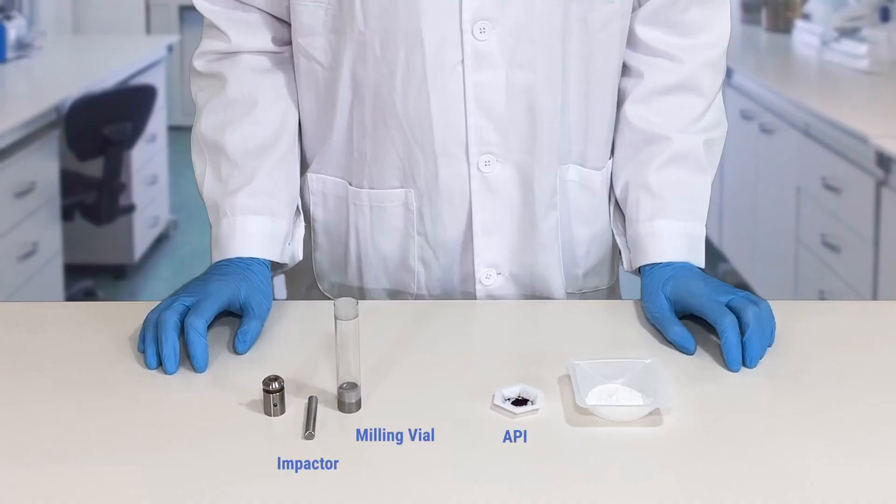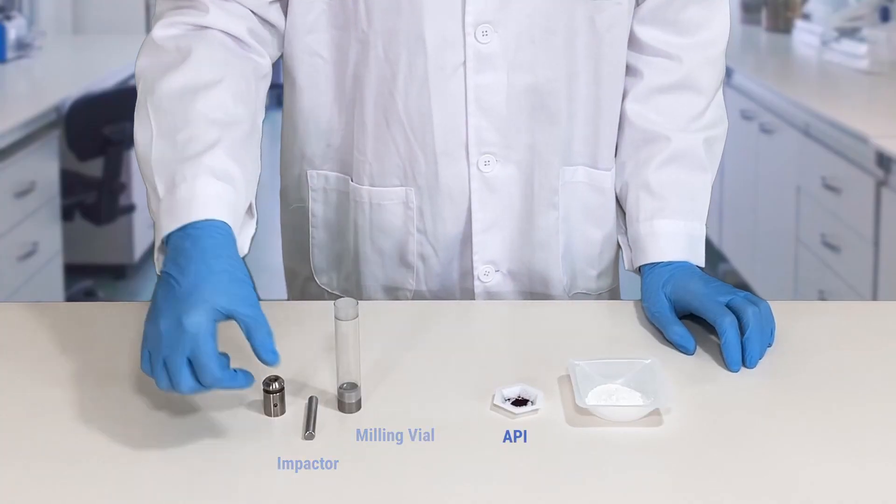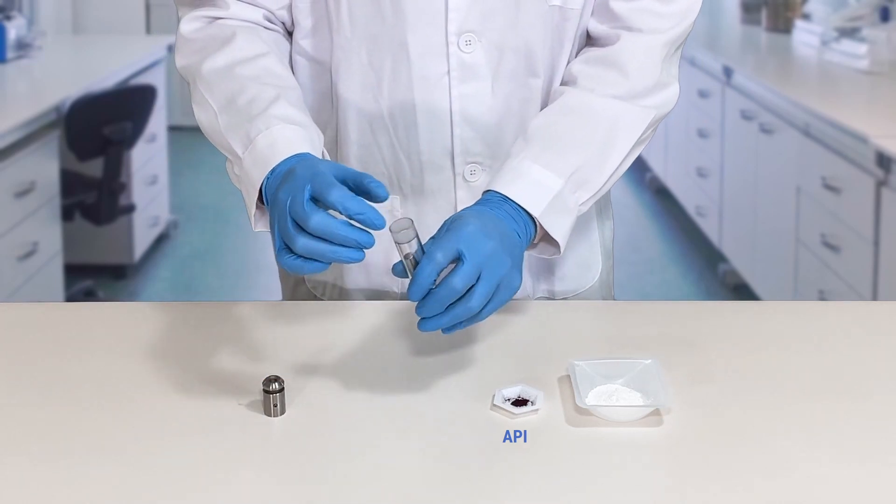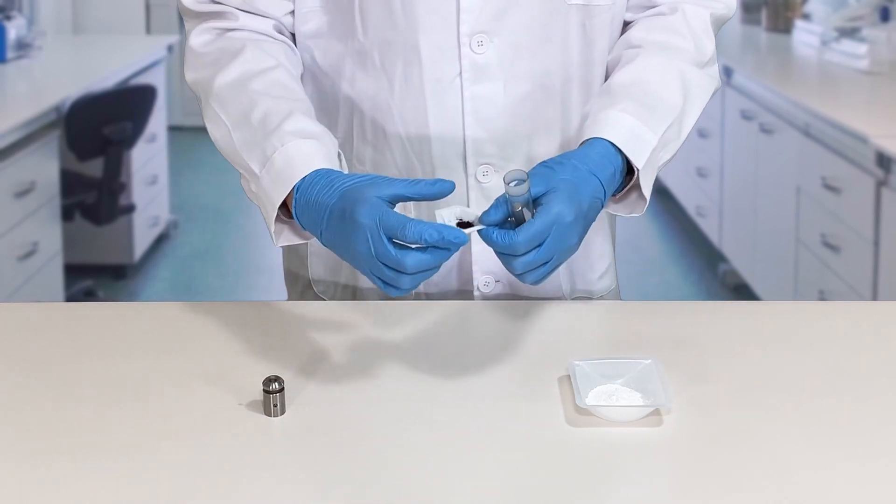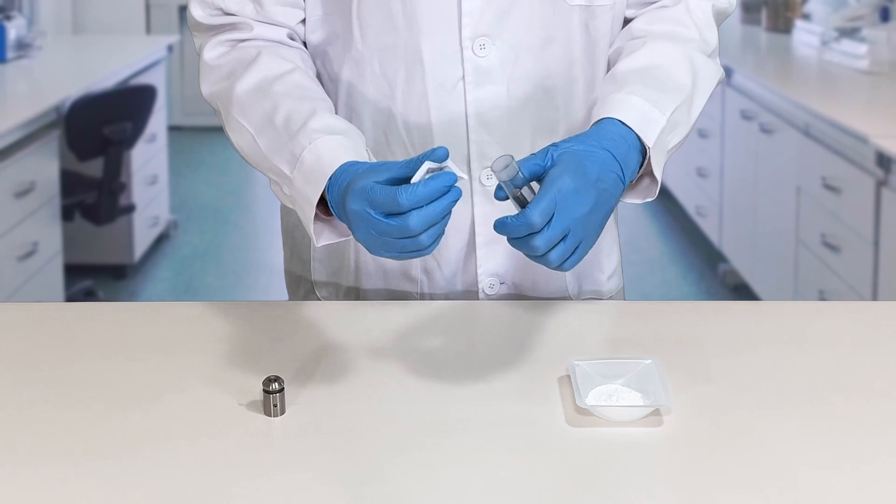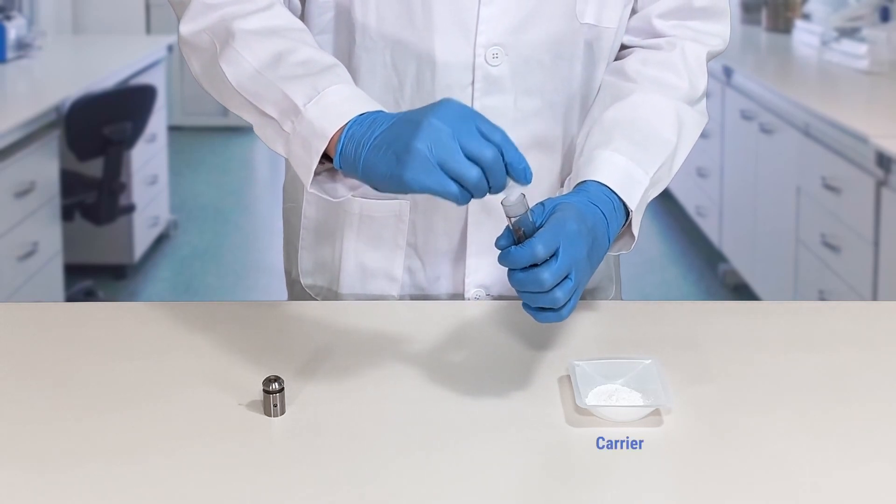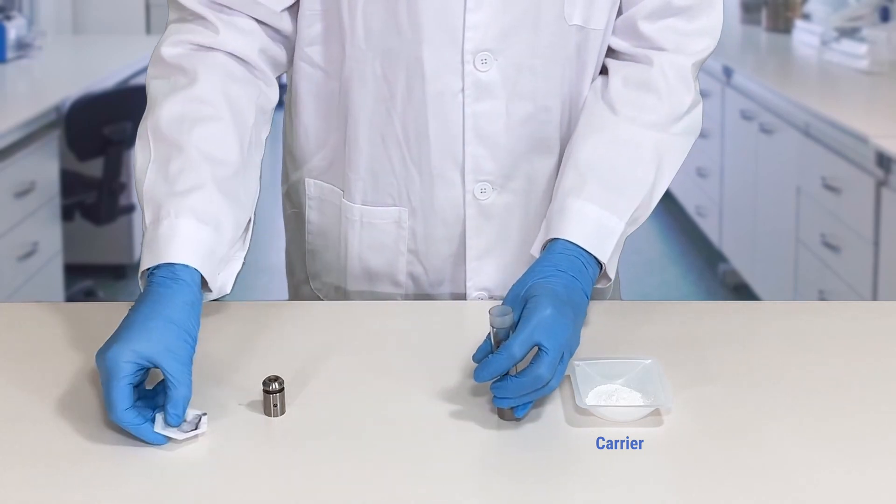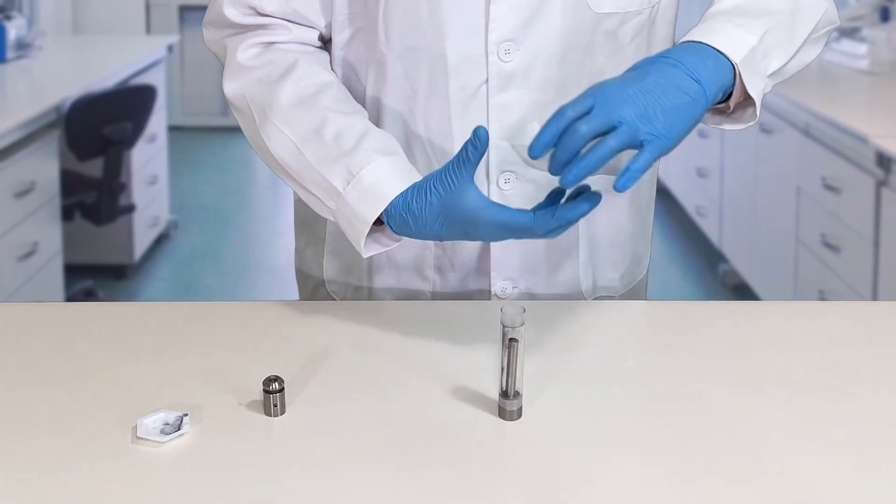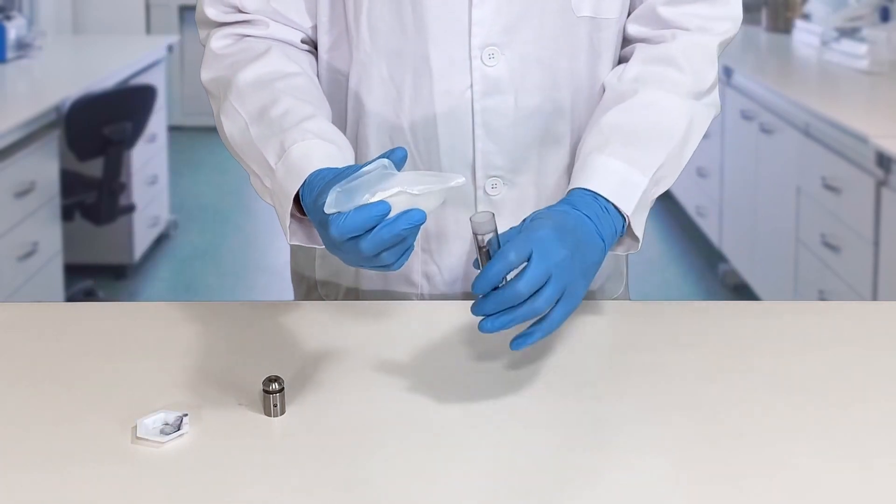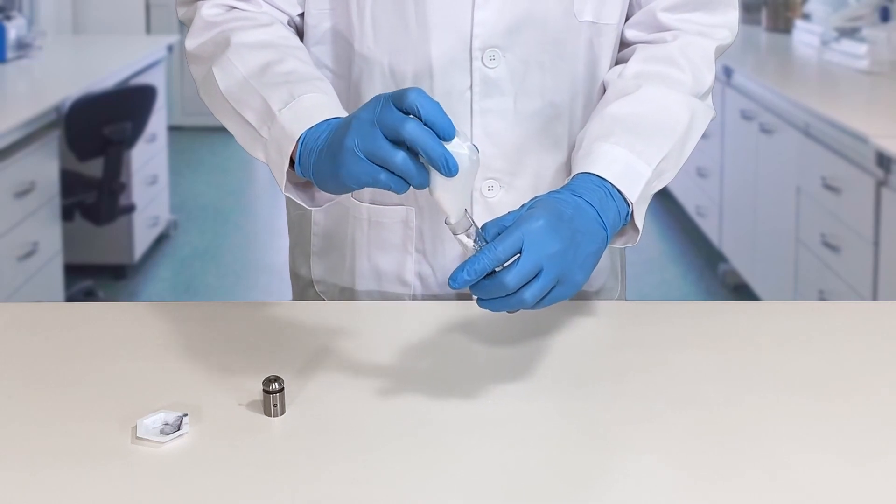Here you can see the parts of the milling vial. The assembling starts by inserting the impactor into the milling jar before adding the material. Adding the impactor after filling the powdery material may cause undesired material discharge by the induced airflow. Add the pre-weighed components of your formulation to the milling jar and close it.